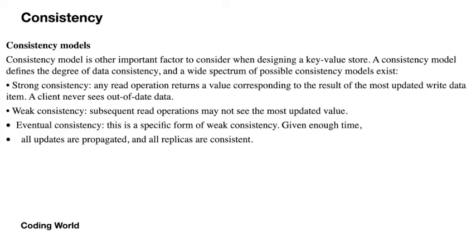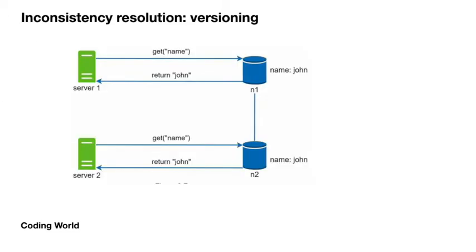There are three types of consistency: strong consistency, weak consistency, and eventual consistency. Strong consistency means you must be acknowledged by N number of nodes for both read and write before returning a success status. Weak consistency means subsequent read operations may not see the most updated value — you can face weak consistency on platforms like Wikipedia. Eventual consistency is a specific form of weak consistency: given enough time, all updates are propagated and all replicas become consistent. There can be a time lag replicating data between nodes, and that lag is acceptable under eventual consistency.